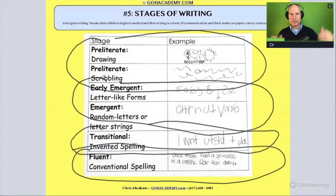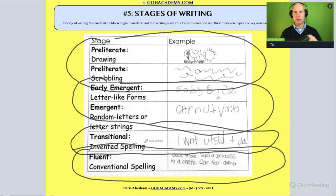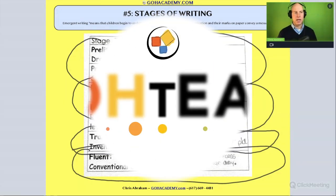So each one of these areas — pre-literate, emergent, transitional, and fluent — they all have their own unique characteristics.